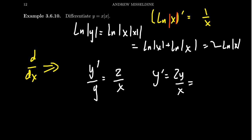But what is y? y is x times the absolute value of x. So you get two times the x times the absolute value of x over x, for which then the x's cancel out. And we see that the derivative here is just two times the absolute value of x.